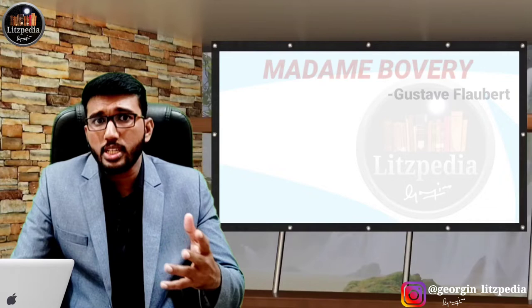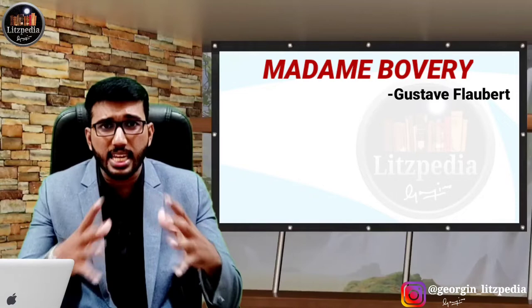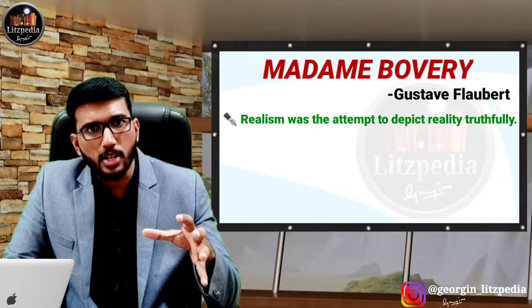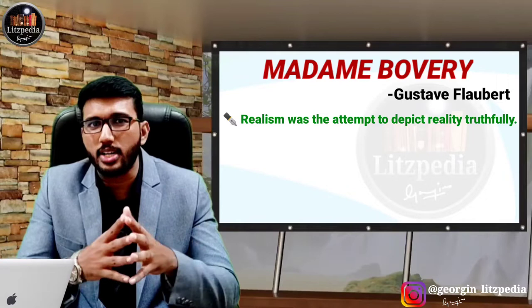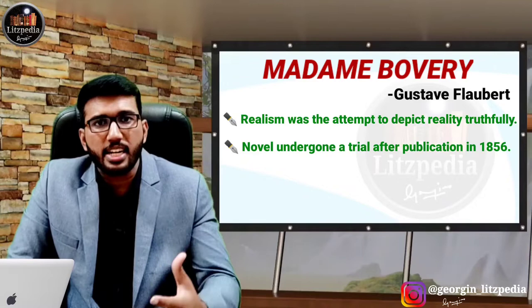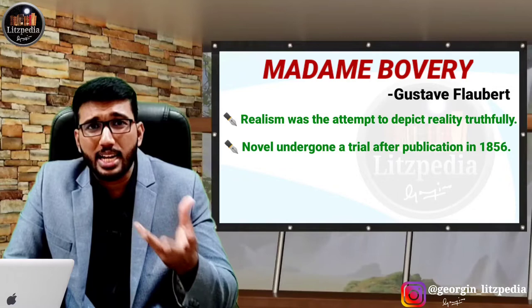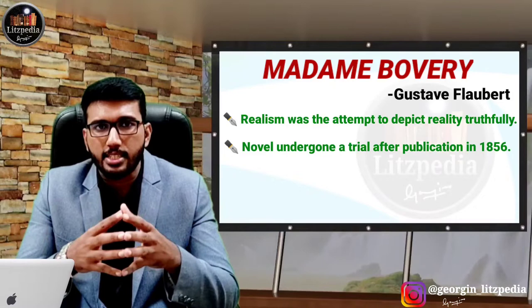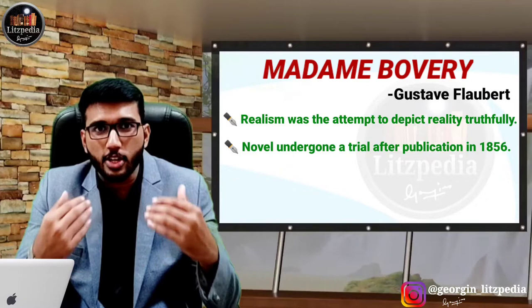During this time period, writers also tried to write things from contemporary life — the real life things they attempted to write. The novel was first published in 1856, and in 1857 the novel had to undergo a big trial. The criticism was that many things depicted in the novel were not apt for society, because many blunt elements were directly represented. Because of that trial, the popularity of the novel also increased.